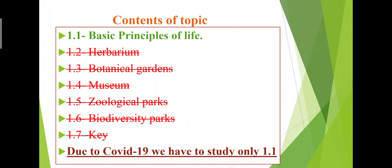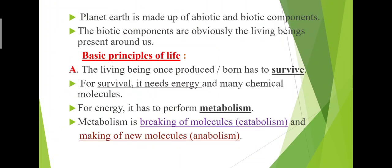The first point is basic principles of life. Then remaining points such as herbarium, botanical gardens, museum, zoological parks, biodiversity parks, and key. But we have to study only the first point, that is 1.1 basic principles of life. The remaining points are deleted only for this year due to COVID-19. So remember, we have to study only 1.1 from this topic.